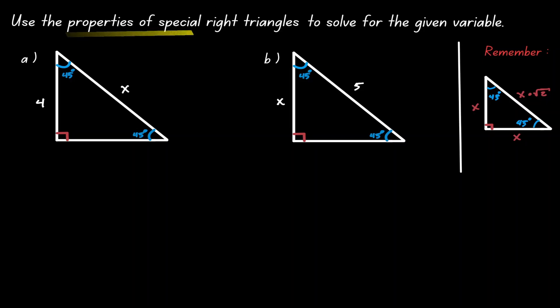Let's use the properties of special right triangles to find the value of the given variables. Under example A, our variable is in the hypotenuse. So how can we find the hypotenuse only given one side of the right triangle? Notice what type of a triangle this is. This is a 45-45-90 degree triangle.